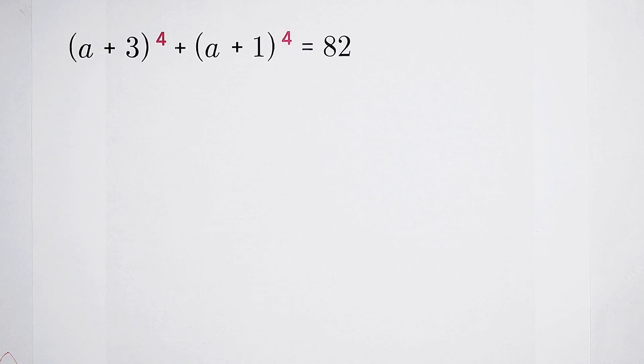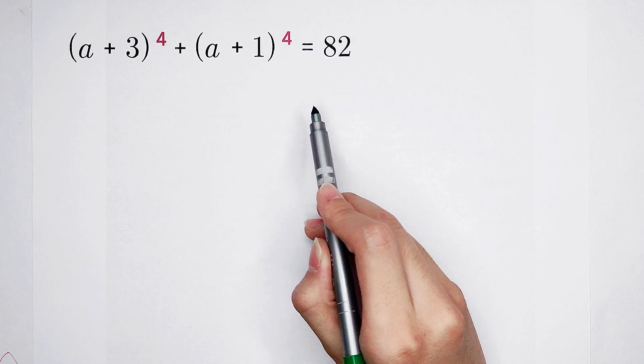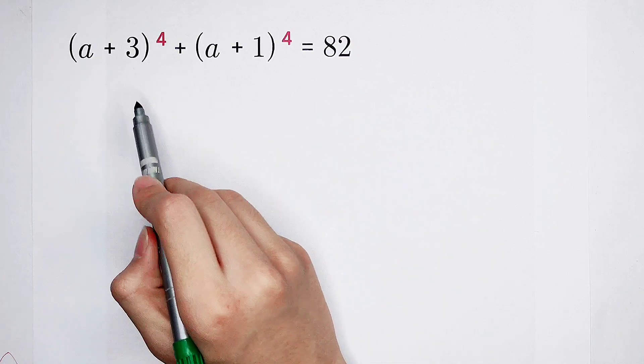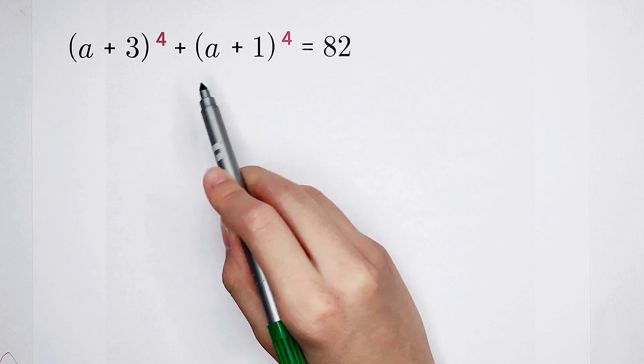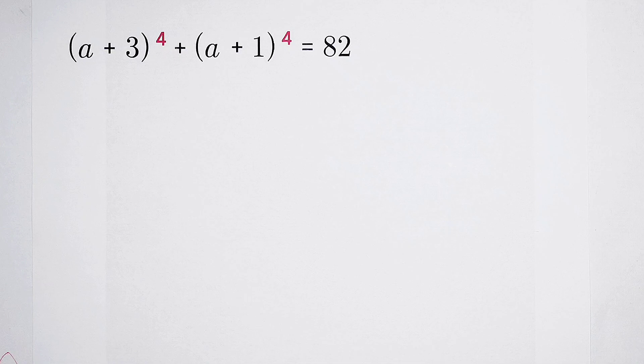Welcome to Math Window. Solve this equation about A: A plus 3 all to the power 4, then plus A plus 1 all to the power 4 equals 82. Which method should we use?